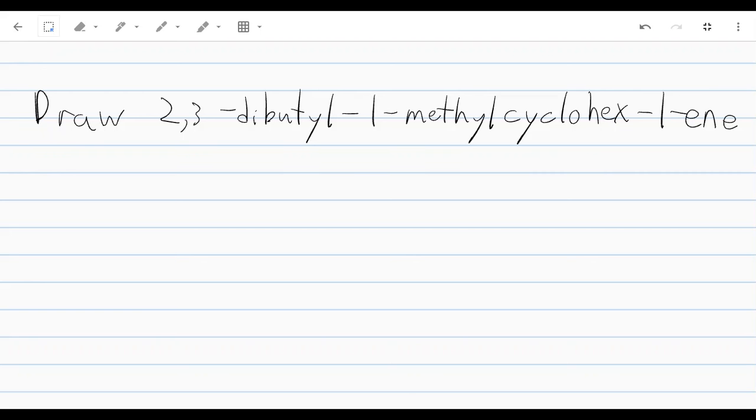In this problem, we're being asked to draw 2,3-dibutyl-1-methylcyclohex-1-ene. Sounds really complicated, but it's actually not. I'm going to advise you do a line diagram for this though, because it's going to make life much easier.